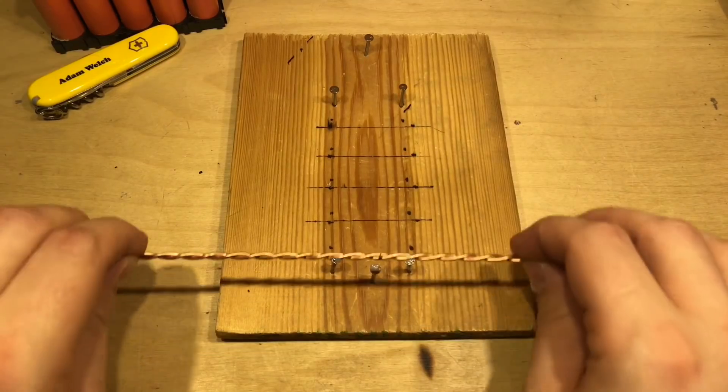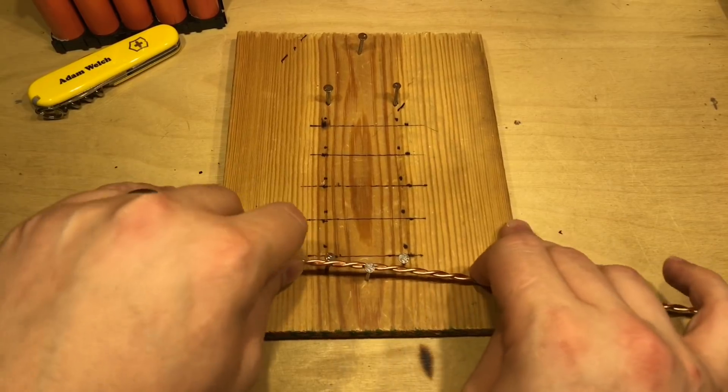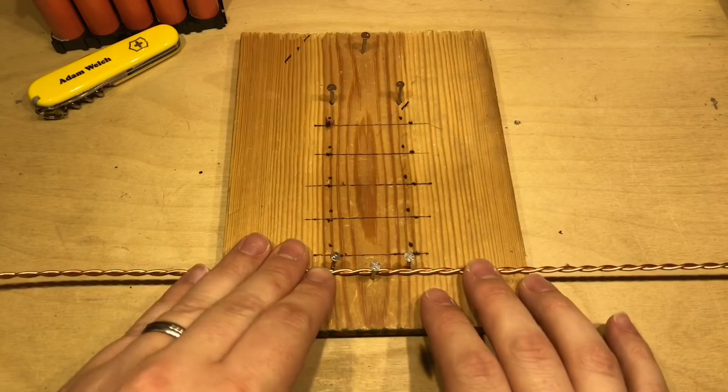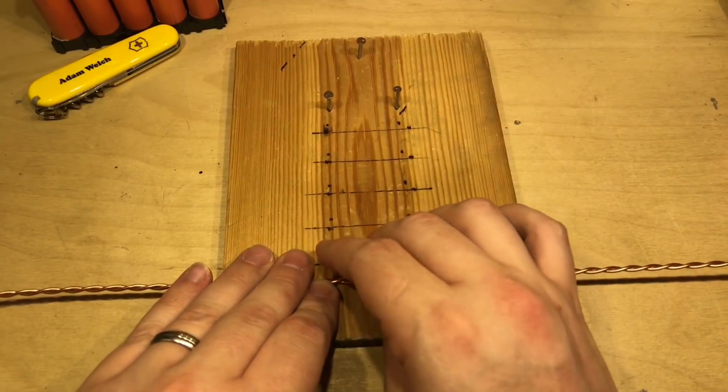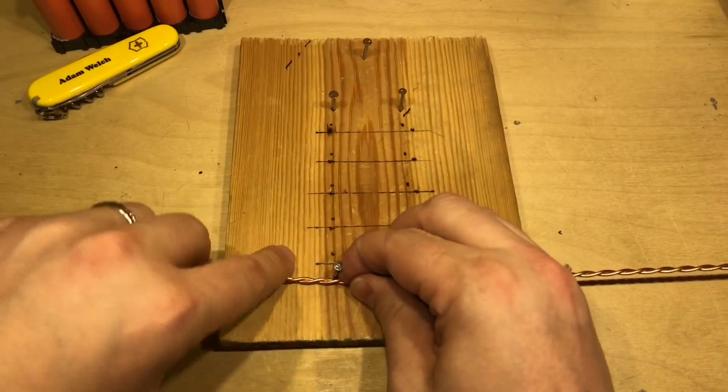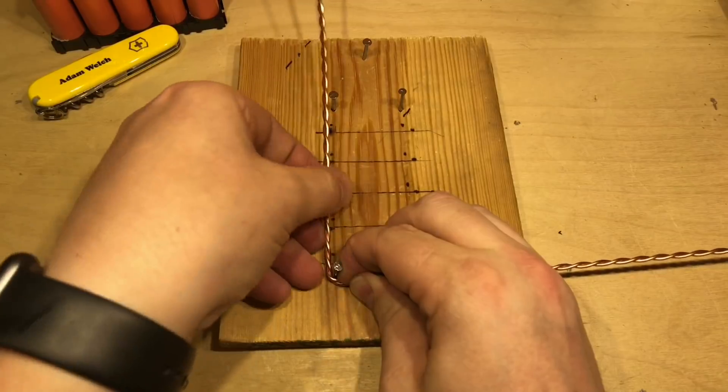Now with that centre point marked, I can use this jig I've made, which is just a few nails in a piece of wood. That will allow me to put the bus bar in those nails. This is the centre point I'm aligning with and then I can just bend the copper around the nails.